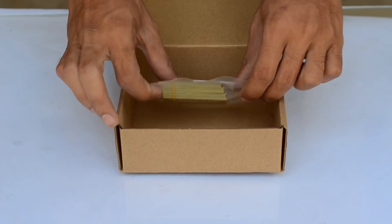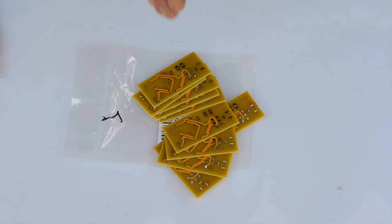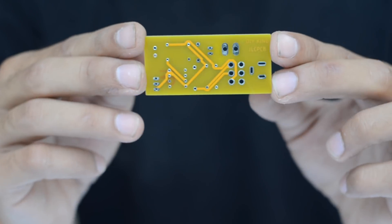As always, the PCBs showed up within just a week. This time I tried the yellow colored masking over my PCBs and it looks fine. It's definitely not as attractive as green or red ones, but the quality of the PCB is definitely outstanding as always.